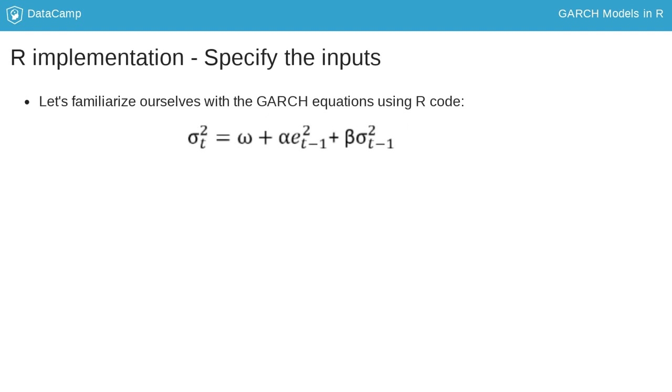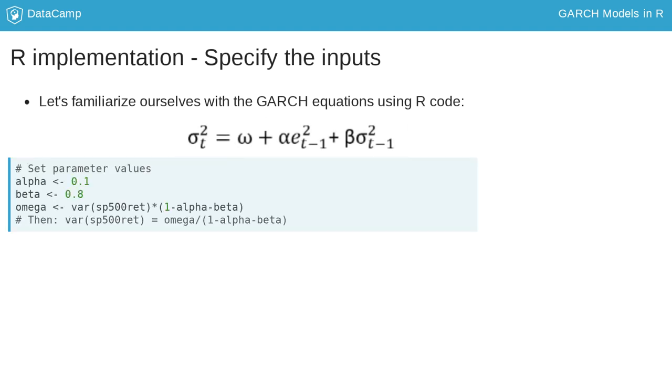To get some intuition, you see here an R script that computes the GARCH variance for the daily S&P 500 returns. The alpha parameter multiplying the square error is set to 0.1. The beta parameter multiplying the previous variance prediction is set to 0.8. The value of omega is such that the long-run variance equals the sample variance.